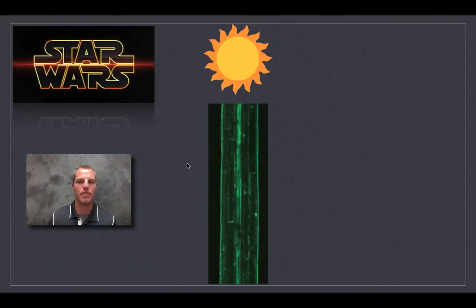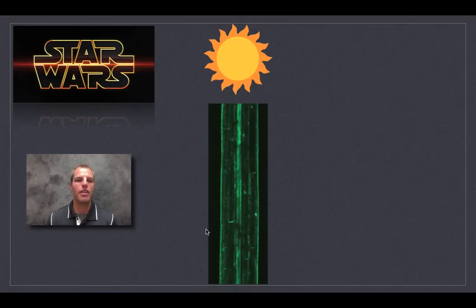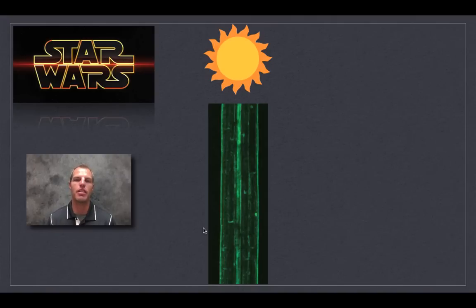So why are plants moving like this? This brings me to my Star Wars example. What causes these responses in plants is predominantly hormones, and I want to use phototropism as an example to show you how these hormones work.